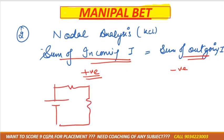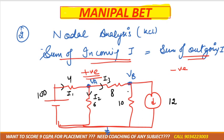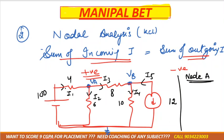Taking a simple example based on a current source: the first step is to determine how many nodes are present. There are two main nodes, and one is the grounded node where the potential is always zero. Next, mark the current directions randomly, then apply KCL at each node. At the node, the sum of incoming current equals the sum of outgoing current: incoming is I1, outgoing is I2 plus I3.